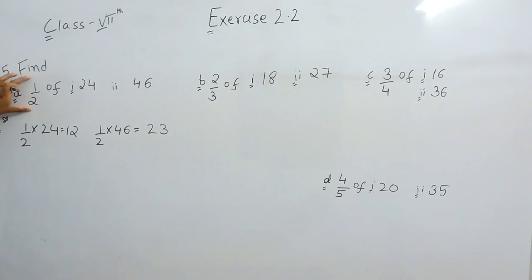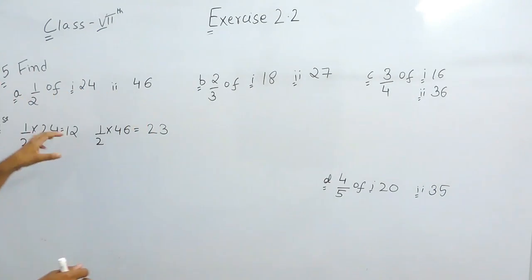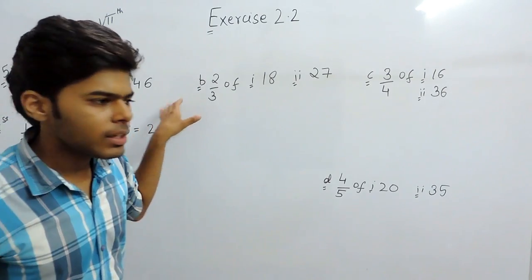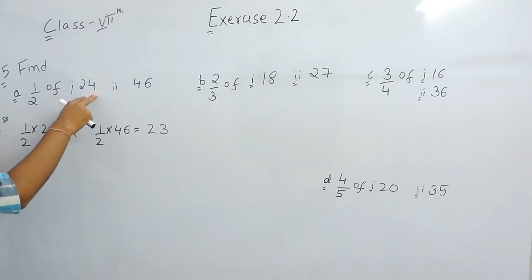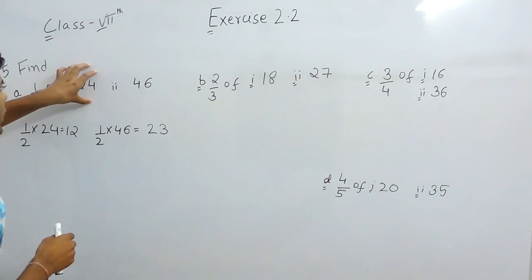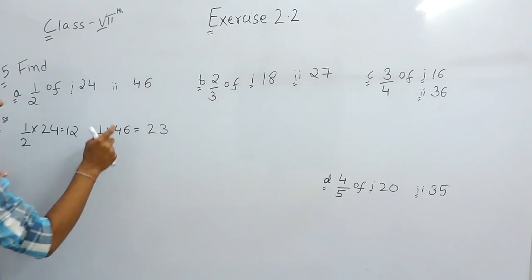The second method is, as we all know that 1 upon 2 means half. Supposingly, if you are having 10 rupees and if I say that you have to half the money, you will say obviously 5. Similarly, here the total is 12. We have to half 24. So 24 half will be 12 and 46 half will be 23.